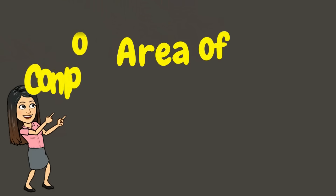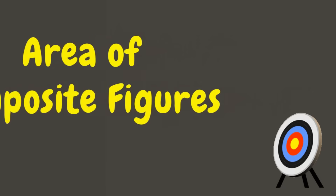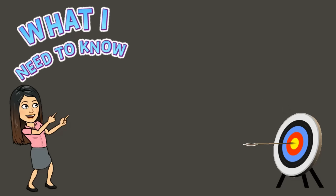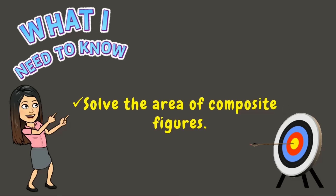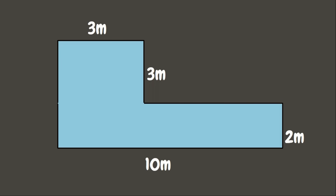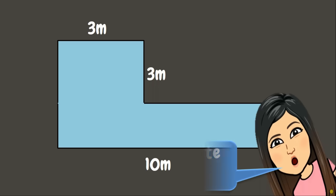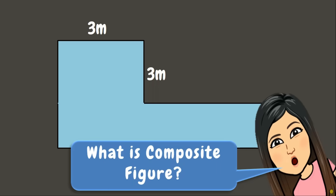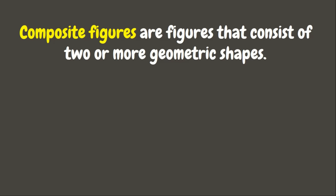Welcome back to my classroom! Today's lesson is about the area of composite figures. Let's begin by understanding what a composite figure means. A composite figure is a figure that consists of two or more geometric shapes.